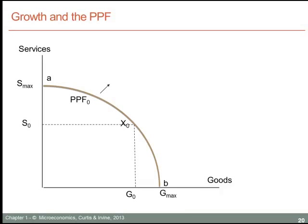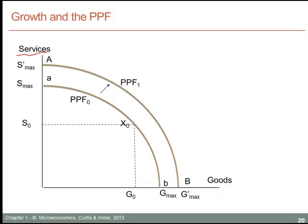When the productive capacity of the economy expands over time, we can think of that growth in productive capacity as being an outward movement of the production possibility frontier. In this diagram, we have services on the vertical axis and goods on the horizontal axis. When the productive capacity of the economy increases — that is to say, when there is economic growth — we represent that by an outward shift in the production possibility frontier.